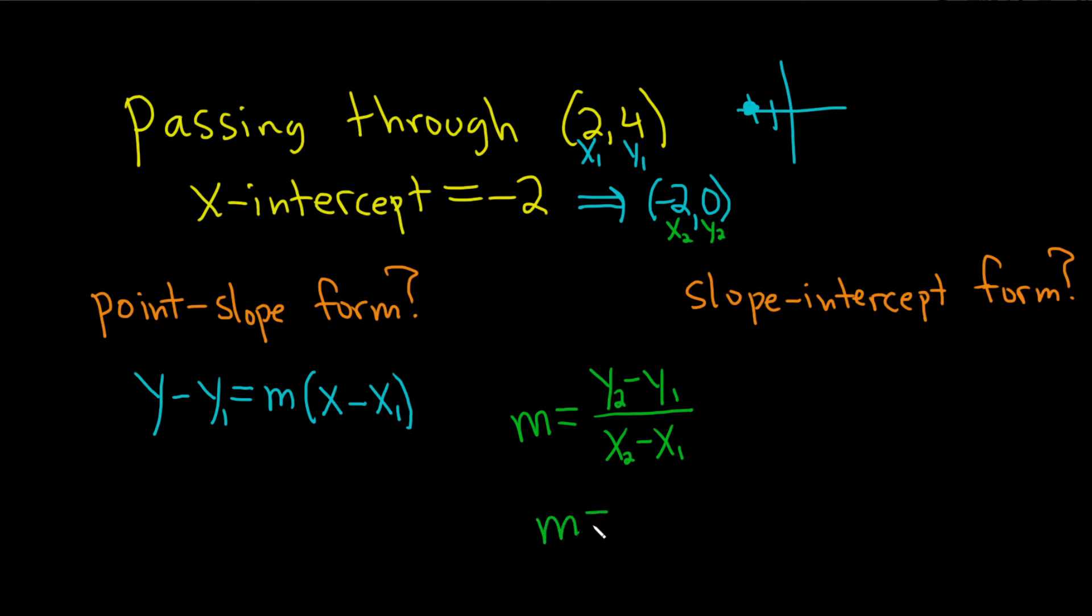So m is equal to y₂ minus y₁. So you subtract the y's. So 0 minus 4 over, and then x₂ minus x₁. So you subtract the x's. So -2 minus 2. So this will be -4 over -4, so it's 1. So the slope is 1. How super nice.